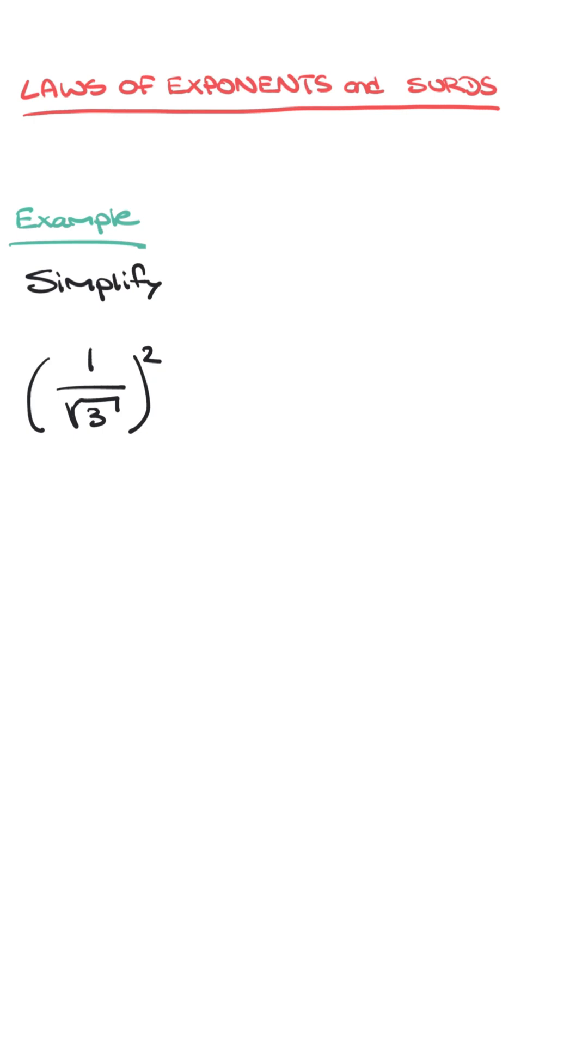Now to do this we're going to need to use our laws of exponents, and the law that we need here is the following. If we have a over b, so a fraction, in parentheses raised to a power n, then that power of n distributes onto both the numerator as well as on the denominator, which leads to the formula you see here.